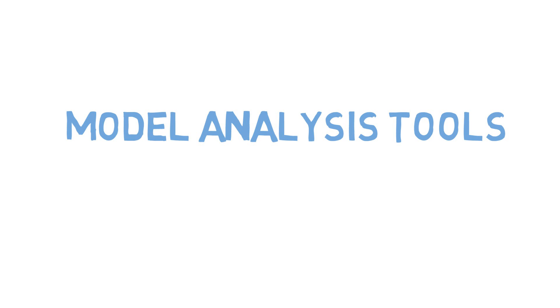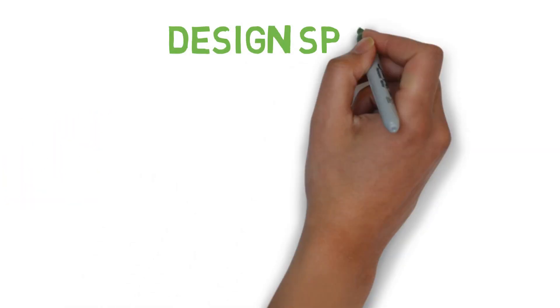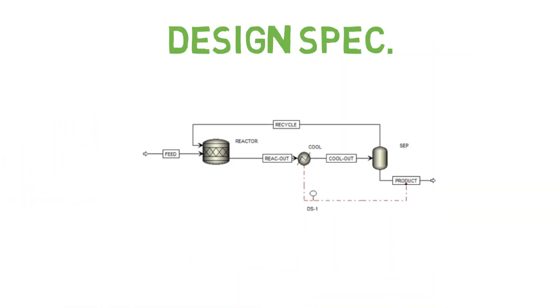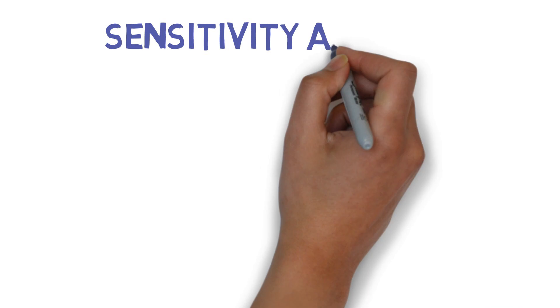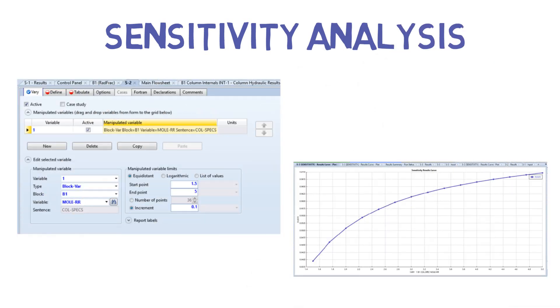Learn about the design specification tool, which allows us to make direct specifications in the simulation environment. Optimization and constraint, as the name implies, optimize your process while keeping in mind certain constraints of the process. And the sensitivity analysis allows us to understand the sensitivity of input variables with respect to output variables.